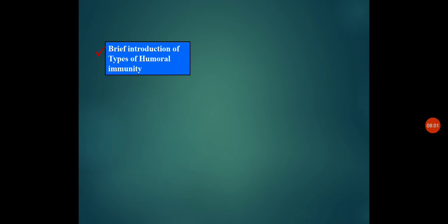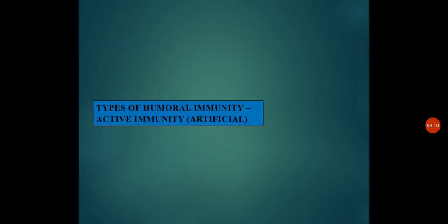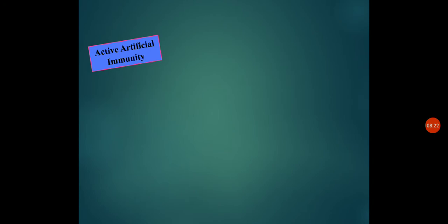So next is a brief introduction about the types of humoral immunity. We covered active natural immunity in the last session. The continuation is artificial active immunity — how you get active immunity artificially. In case of artificial active immunity, vaccines are introduced. We have come across the word vaccine before — what exactly vaccines are, why they are prepared, how they are prepared, and what their purpose is.